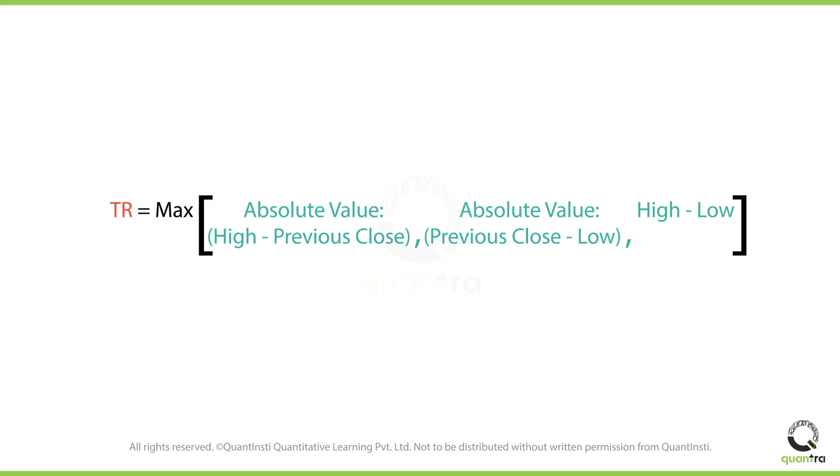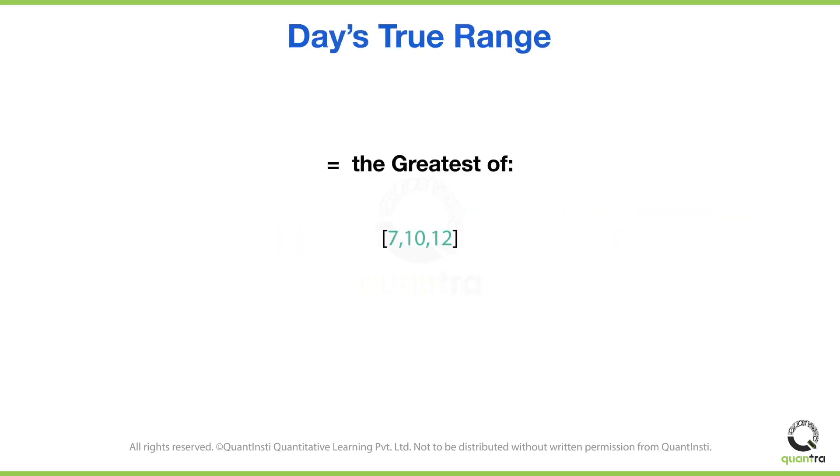Based on the same logic, what according to you would be the day's true range if the following were the values for the three cases? As discussed earlier, the true range for any given day would be the greatest value of the three cases. As 12 is the greatest value here, we can conclude that the day's true range would be 12.